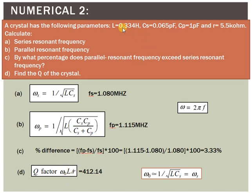Next, the quality factor Q = ω₀L / R = 2πFs·L / R. With Fs = 1.080 MHz, L = 0.334 H, and R = 5.5 kΩ, substituting gives Q ≈ 412.14. Comparing to the previous numerical, the Q factor here is considerably lower, which means this crystal has less frequency stability.